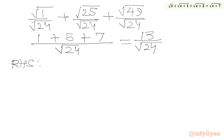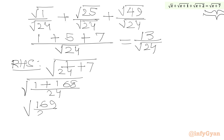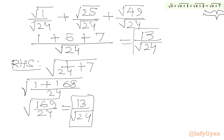Now calculating the RHS: √(x + 7) = √(1/24 + 7) = √((1 + 168)/24) = √(169/24) = 13/√24. Our RHS matches our LHS, so our answer is verified. The final answer is x = 1/24.